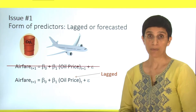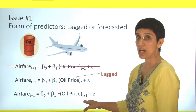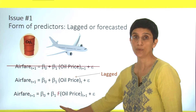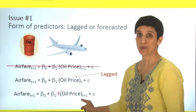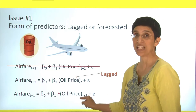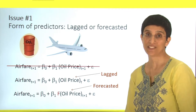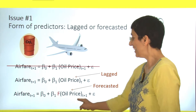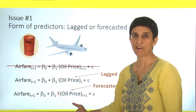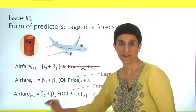A different option is to include oil price at time t plus 1, but not the actual value — rather its forecasted value. So we would forecast oil prices and then plug that forecast into our airfare model. This is called a forecasted predictor. In this case, it's probably going to be very difficult to do, because if I can forecast oil prices, I'm probably no longer interested in airfare.